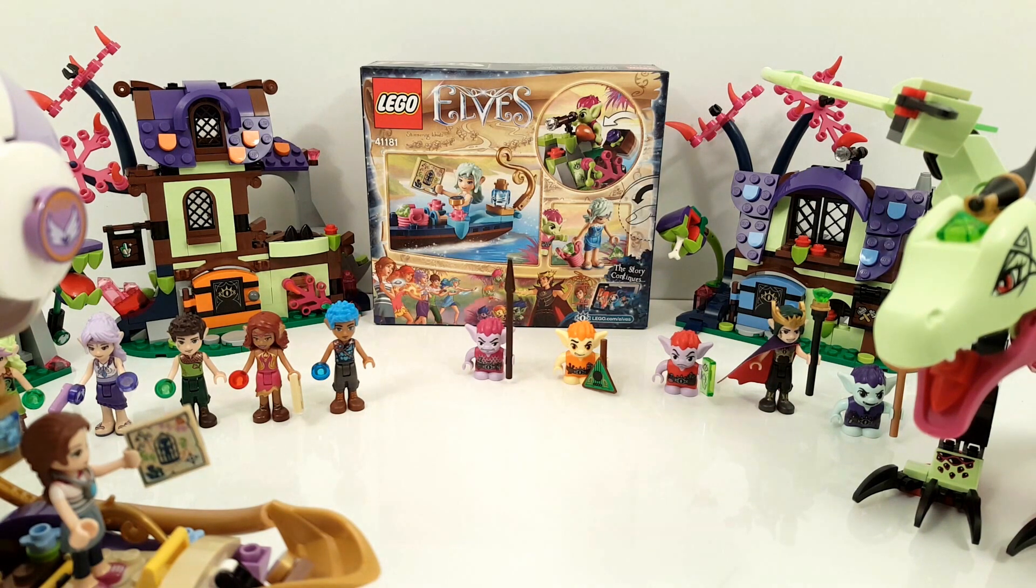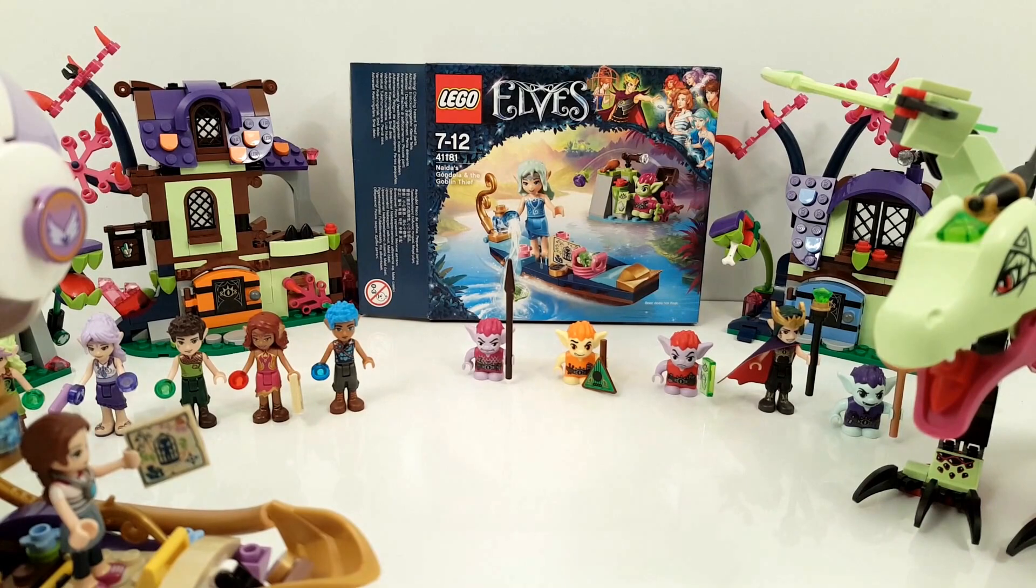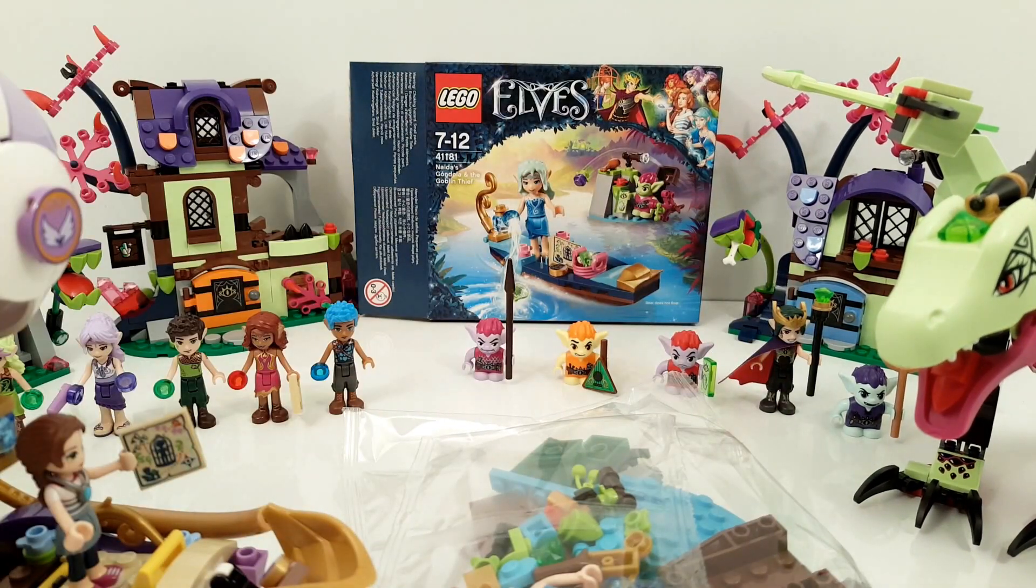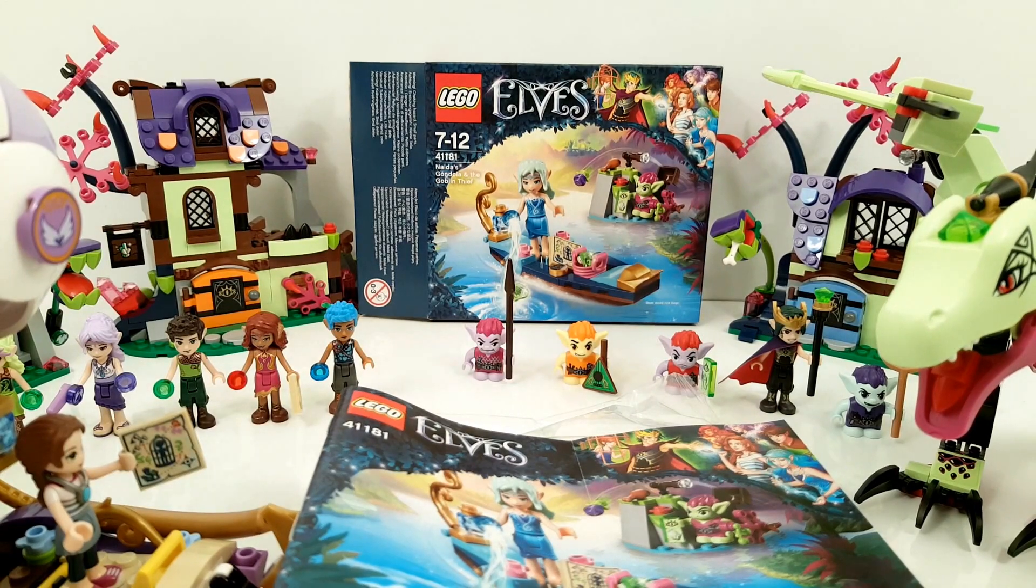The set comes with Naida and Roblin the Goblin. The set has two little bags and the instructions, and the instructions go all the way to page number 30.